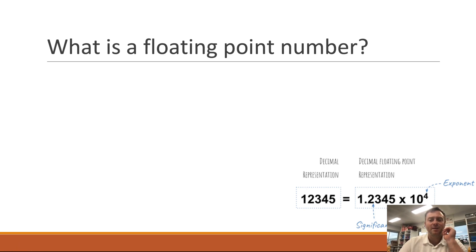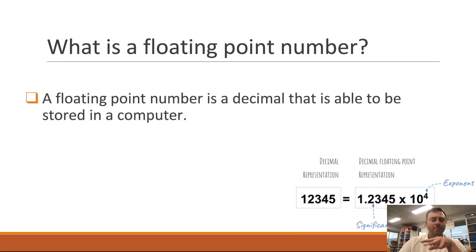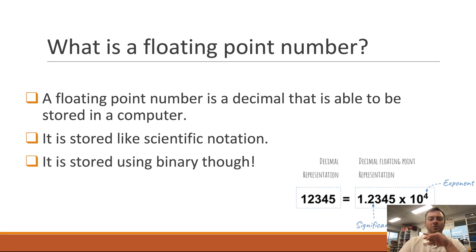So what is a floating point number? Basically, it's changing into scientific notation. You'll have the normal number and then the way that it's stored into computer, it's very similar to scientific notation. It's stored using binary though, so instead of our normal number system, you have to store it in ones and zeros.